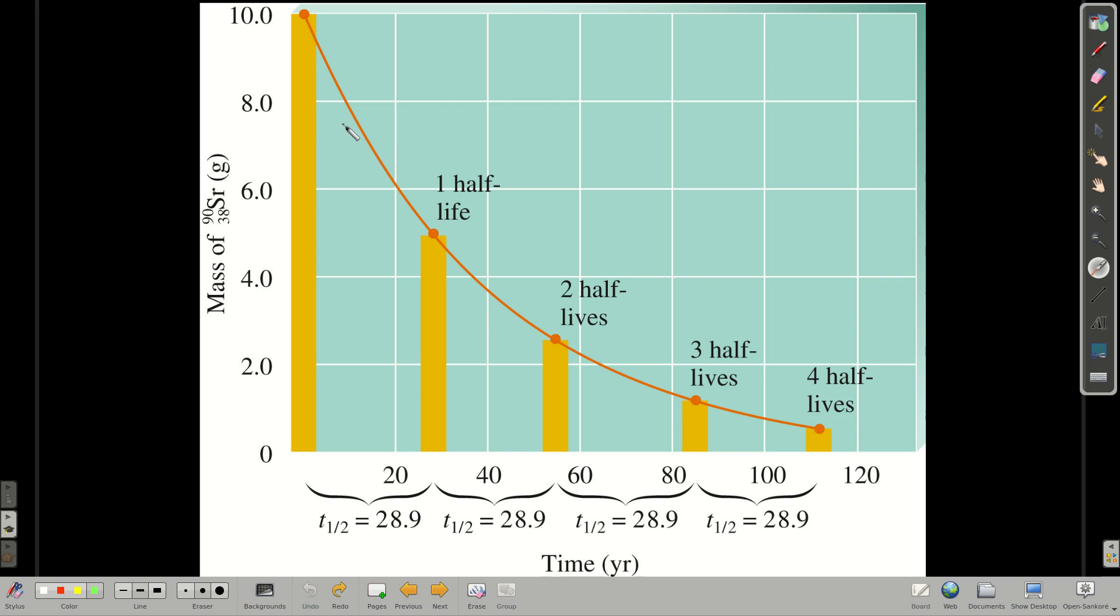So what is half-life? Half-life is the time that it takes for half of the original amount present to decay. Because it's a first order rate law, the t one-half doesn't change. It stays constant as time goes on. So let's say we start with 10 grams of strontium-90. Its half-life is 28.9 years. So after 28.9 years, we'll have half of that, or five grams, present.